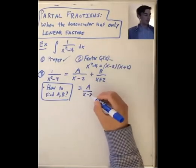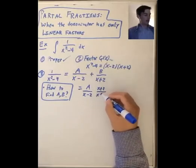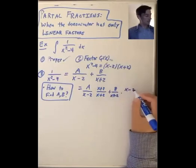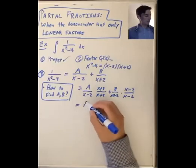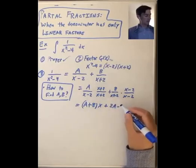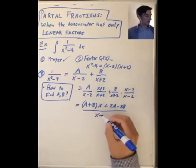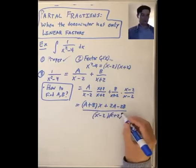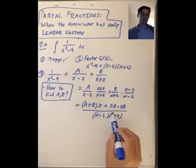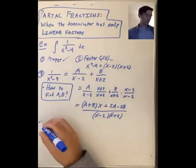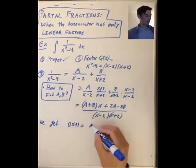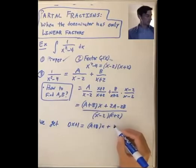We want to put everything over a common denominator. We'll multiply a over x minus 2 by x plus 2 over x plus 2, and add b over x plus 2 times x minus 2 over x minus 2. We'll rewrite the numerator as something times x plus something not involving x. Now we have two rational functions with the same denominator, so their numerators also have to be the same. So we get 0x plus 1 equals a plus b times x plus 2a minus 2b.